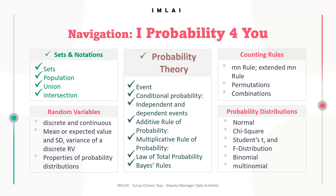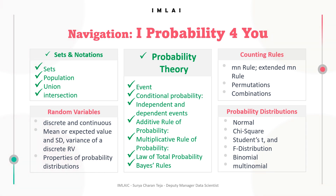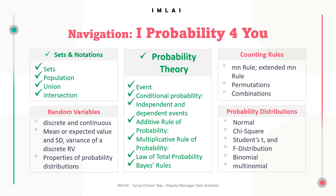Once we were done with sets and notations, we moved into probability theory. In probability theory, we covered various types of events, conditional probability, independent and dependent events, addition rules for probability, multiplication rules for probability, law of total probability, and Bayes' rule.